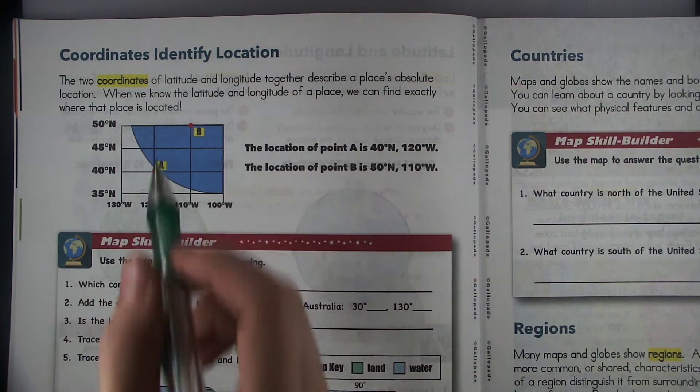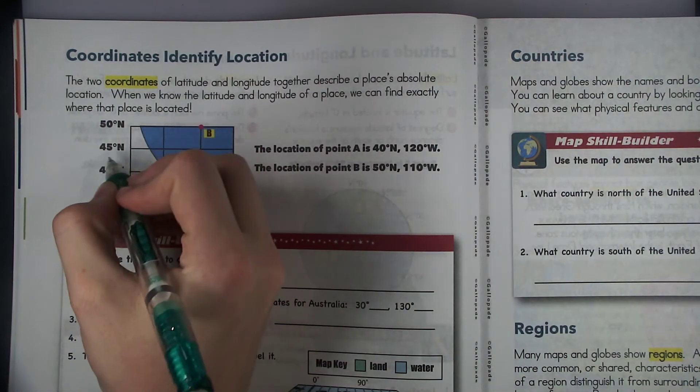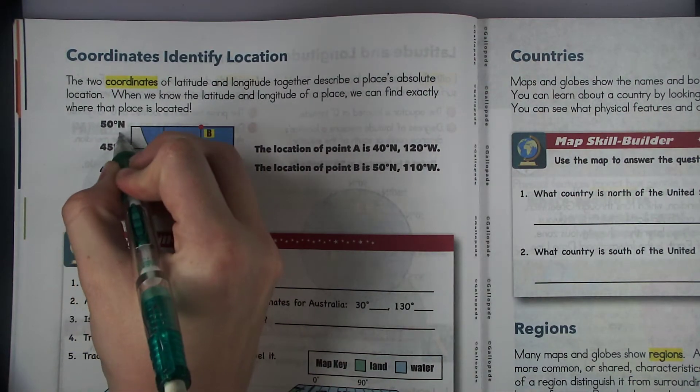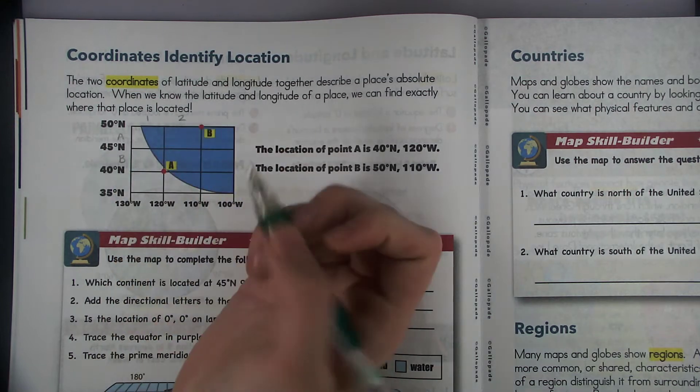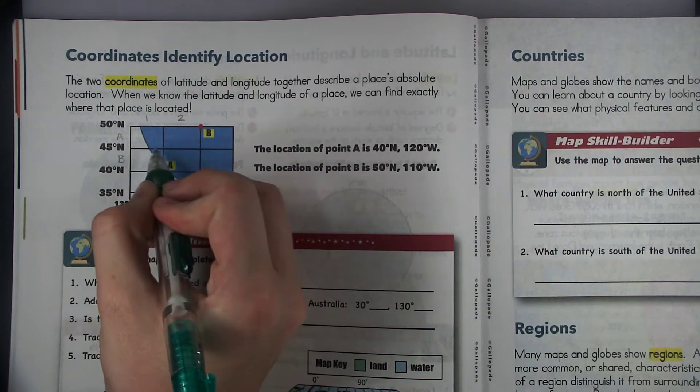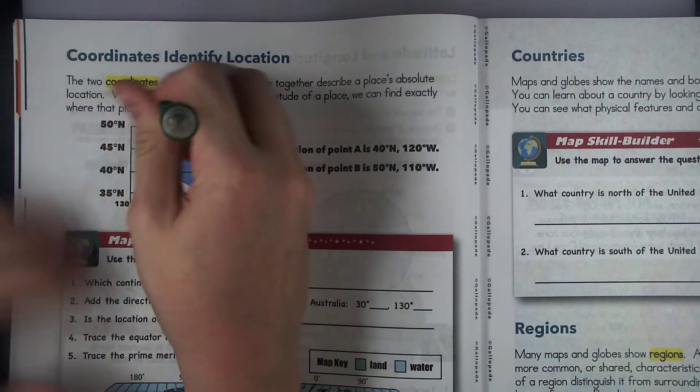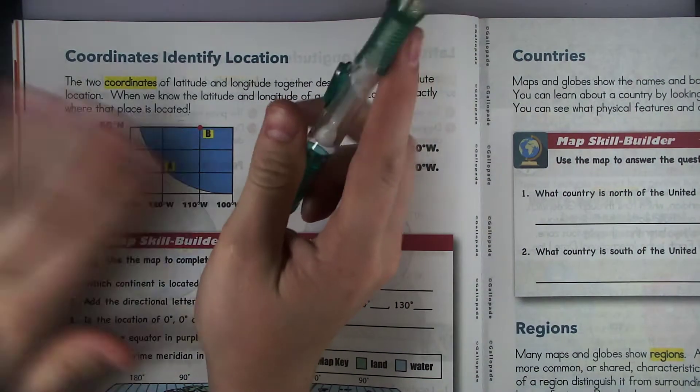So kind of just like those grid maps we did, it's very similar to that except instead of it being like B, A and then like 1, 2 and stuff like that, these are actually going to be the lines that you're looking at. So you're not going to look at the space in between the lines, you're going to look exactly at the lines.